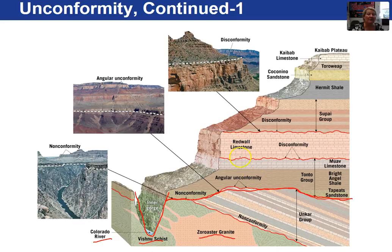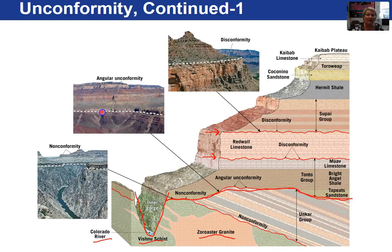Finally, these two examples up in the Red Wall Limestone and Supai Group represent disconformities. Would you be able to recognize this unconformity as an angular unconformity, or this unconformity as a disconformity?